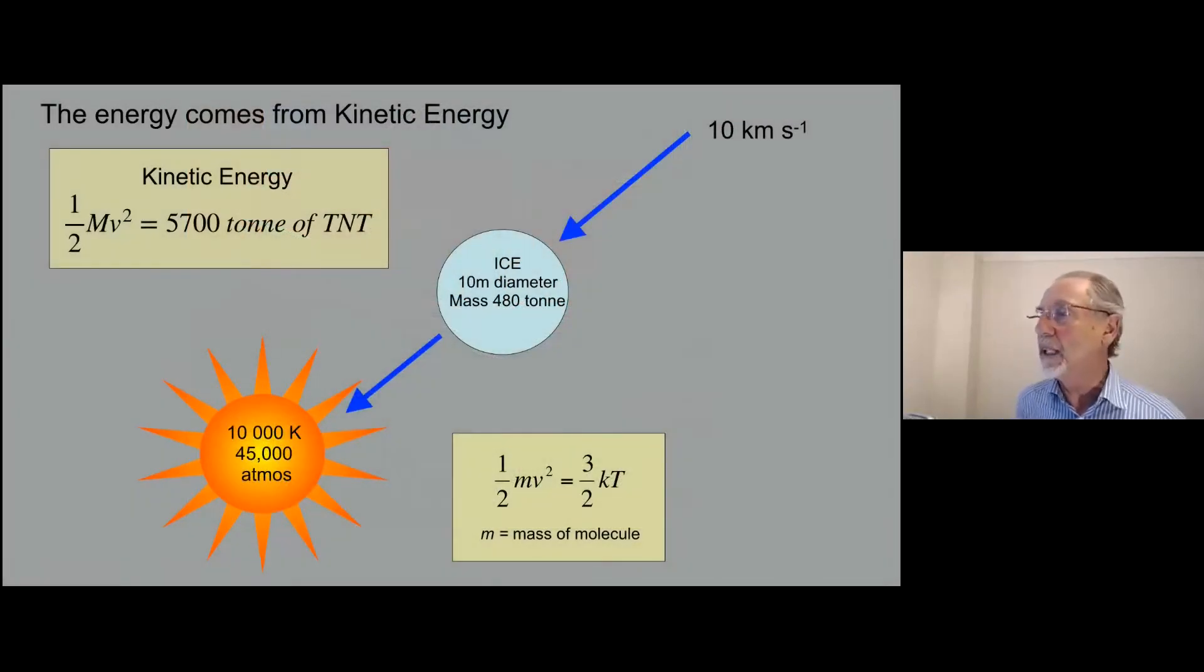So the energy comes from kinetic energy. And you can use the simple half mv squared. And if we take this example, 10 kilometers a second, a sphere of ice 10 meters in diameter, has that equivalent 5.7 kilotons of TNT. And if we turn the linear velocity of this object into the random velocity of the individual molecules, just conserving energy, we can use this little equation here. And if we converted this instantly, we would have a temperature of 10,000 degrees and a pressure of 45,000 atmospheres within this sphere. Now, of course, as you can see, the energy is not liberated instantaneously. But this gives you the sense of the energetics involved.